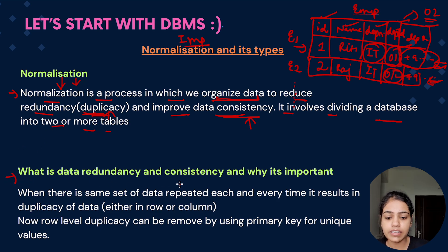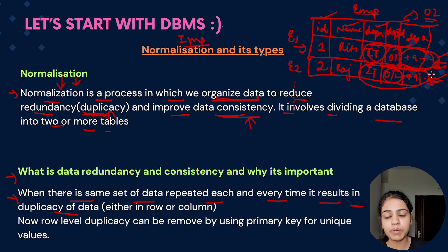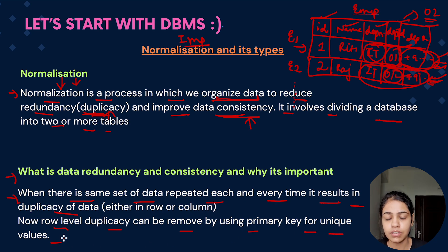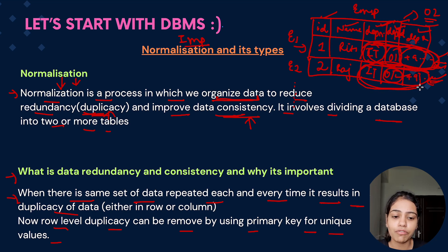Whenever there is a same set of data repeated each and every time it results in the duplicacy of data — for example IT and 01 getting repeated each and every time. Row level duplicacy can be removed by using a primary key for unique values. There are two types of duplicacy: one is column level and one is row level. For certain columns like department name, department id and department phone number, all values are getting repeated — this is called column level duplicacy.